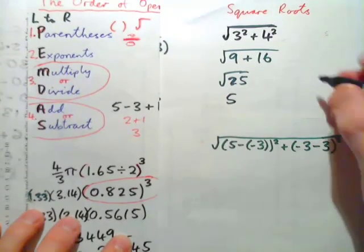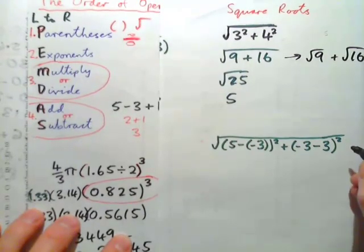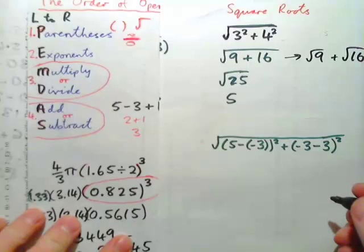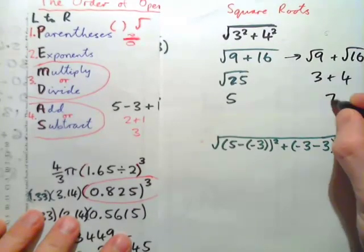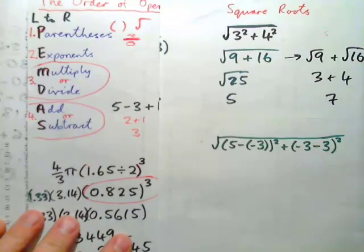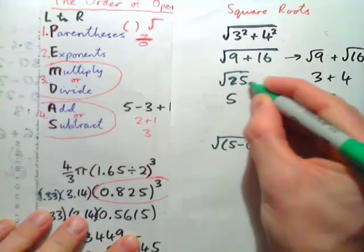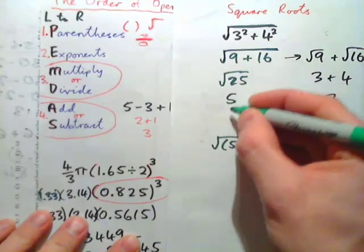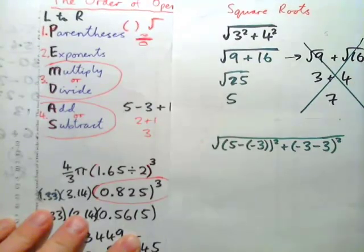A common mistake is people write this as root 9 plus root 16. Root 9 gives 3, root 16 gives 4, and that's 7 — but that's wrong. The correct answer is 5, not 7. The reason is you must do everything inside the grouping symbol first — turn it into 25 and then take the square root. Splitting the root across the addition does not follow PEMDAS, so that approach is incorrect.